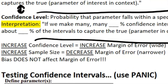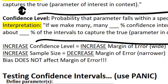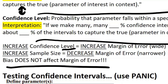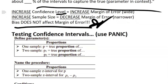A few more caveats: if you increase the confidence level, that increases your margin of error and makes the interval wider. If you increase the sample size, it decreases your margin of error, making the interval narrower — we covered this in sampling distributions. Also really important for multiple choice: bias does not affect margin of error. That will likely be one of the answer choices, so remember it does not affect margin of error.